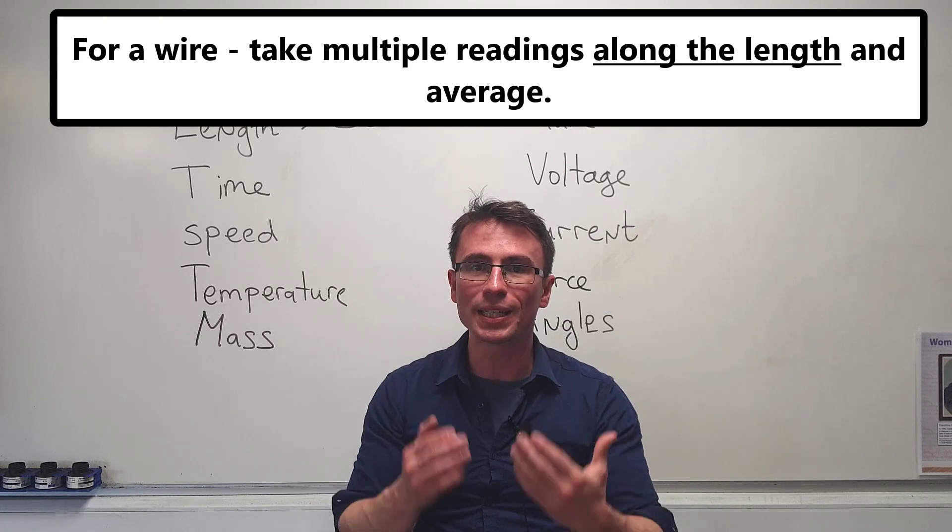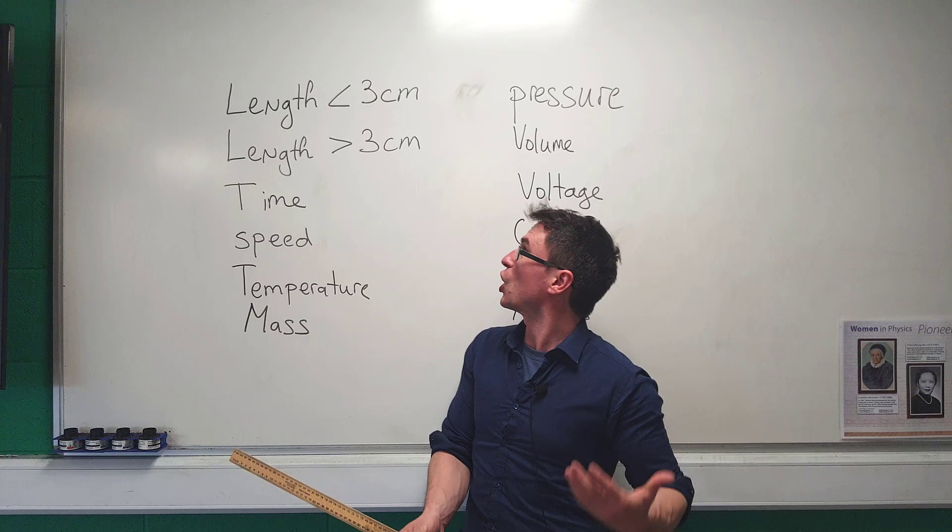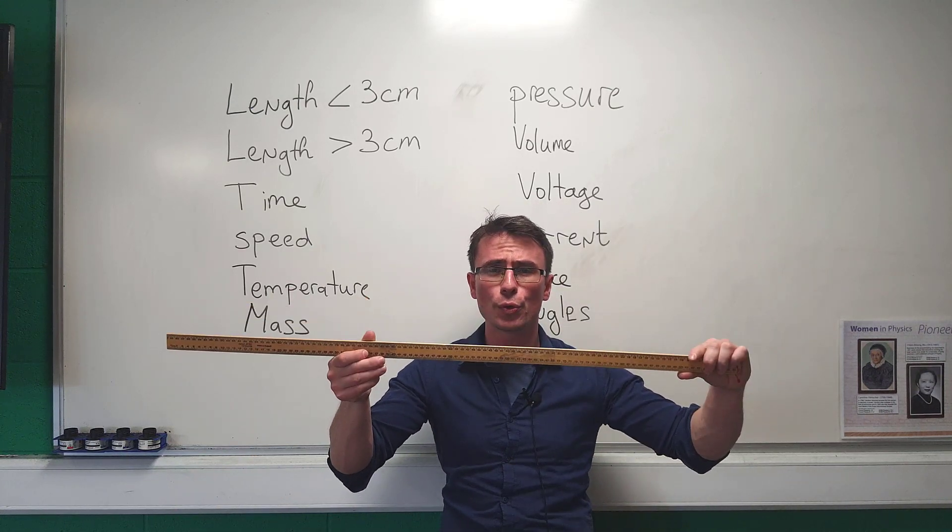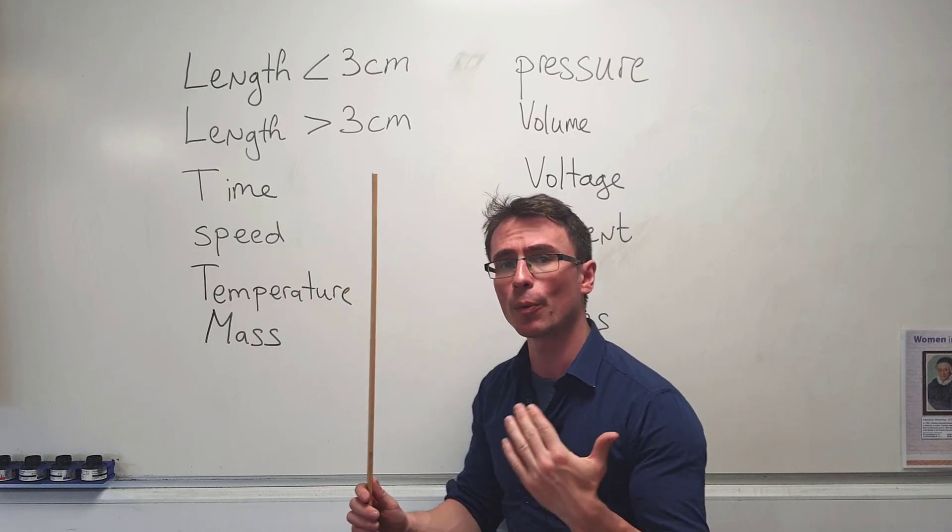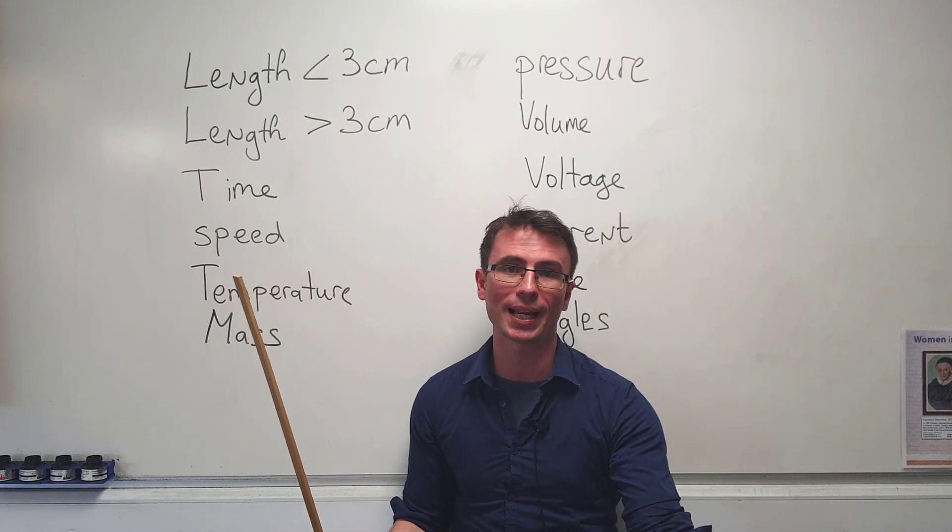As always with micrometers, we need to take several readings and take an average. For distances larger than three centimeters, we can just use a ruler. We just need to ensure that our distances are taken at eye level to avoid a parallax error.